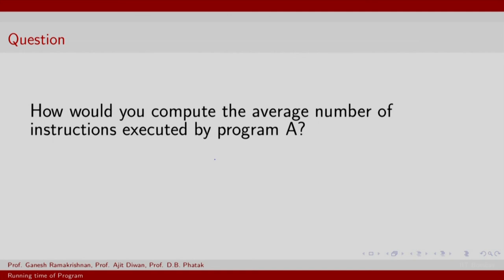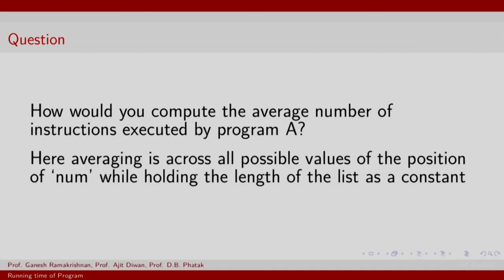So, how do you compute the average number of instructions executed by program A? And when we talk of average we mean what? We mean average across all possible values of the position of num or the element e while holding the length of the list as a constant. So, this is the kind of average we get interested in and why is this so? Well, we have already seen that looking at the time as a function of num is not really meaningful. However, looking at the time as a function of length is meaningful. So, you hold the length constant, average across all values of num, change the length and average across all values of num and so on.